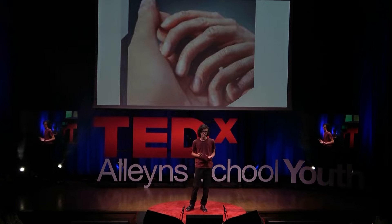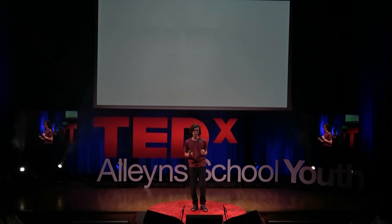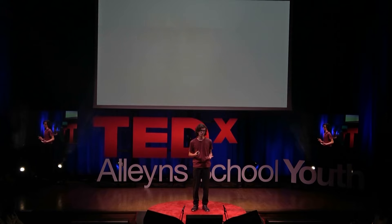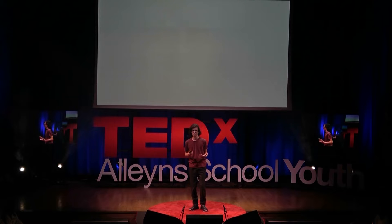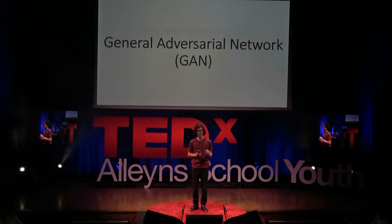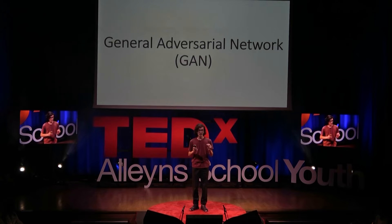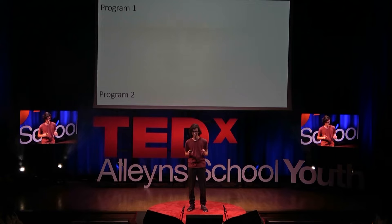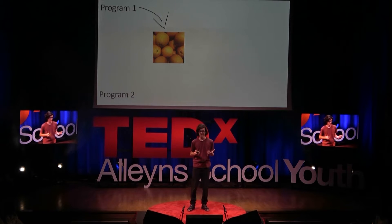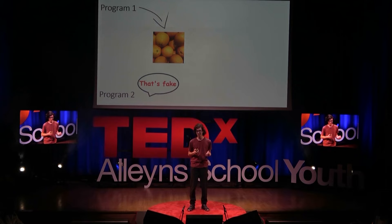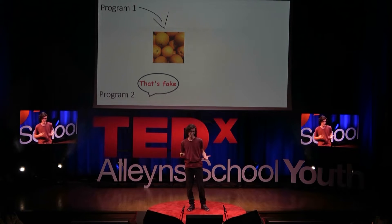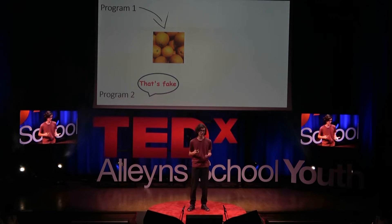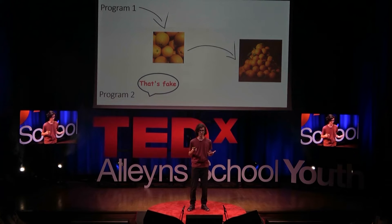To really understand the answer, we first have to try to understand how these AIs actually work. There are two main AI models used to generate images. The first is called a generative adversarial network system, which consists of two algorithms. The first generates an image, and the second does its best to figure out if it's real or fake. Together, they improve each other and ultimately the quality of the final image.